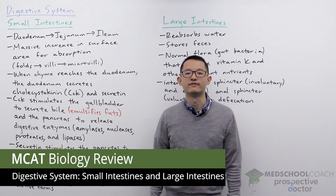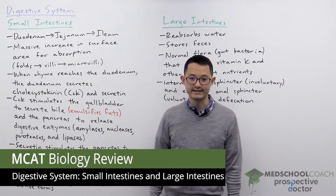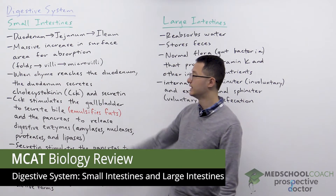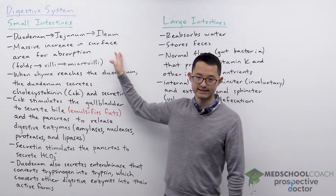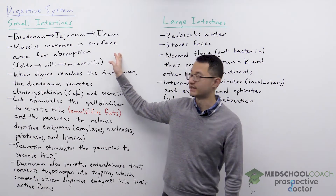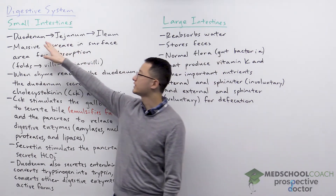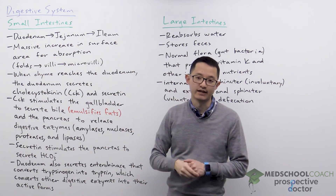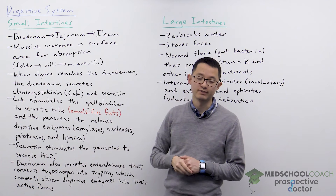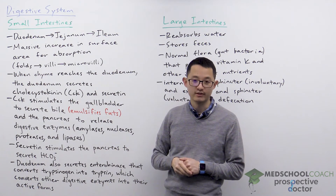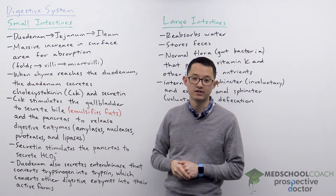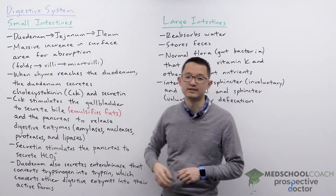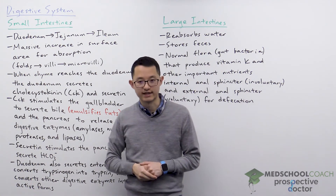In this video we're going to go over the small intestines and the large intestines. The small intestines has three segments: the duodenum, jejunum, and ileum in that order. This means that the duodenum is connected to the stomach and the ileum is connected to the large intestines.